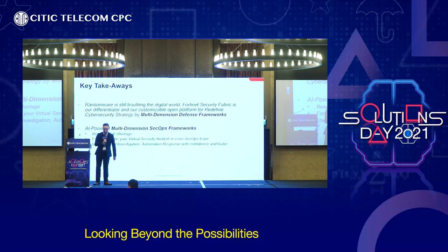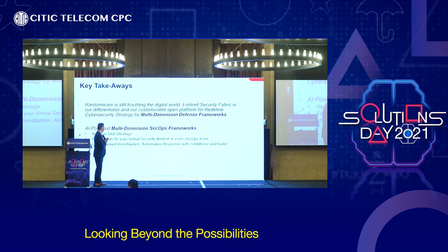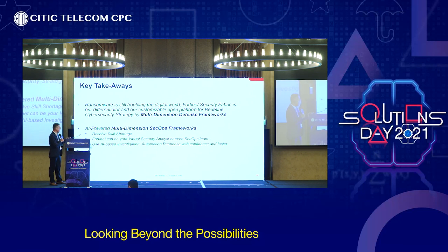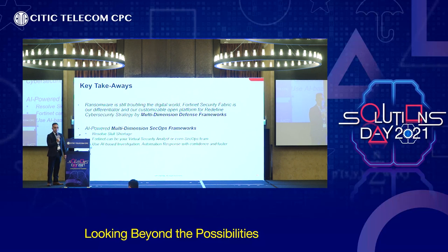This is my last slide — the key takeaways today. Ransomware is still traversing the network. Our security framework helps you differentiate from other solutions through a multi-dimensional defense framework. We have three important things: first, we solve the skill shortage — your team or IT staff do not need to be very experienced because you have the tools. Second, FortiAI can be your Virtual Security Analyst — it reviews reports and incidents for your team. Third, AI-based investigation, automation, and response — with confidence and faster. Remember these three points. Thank you very much.